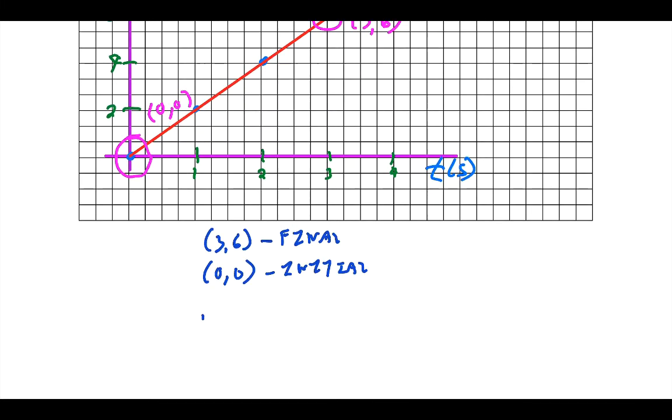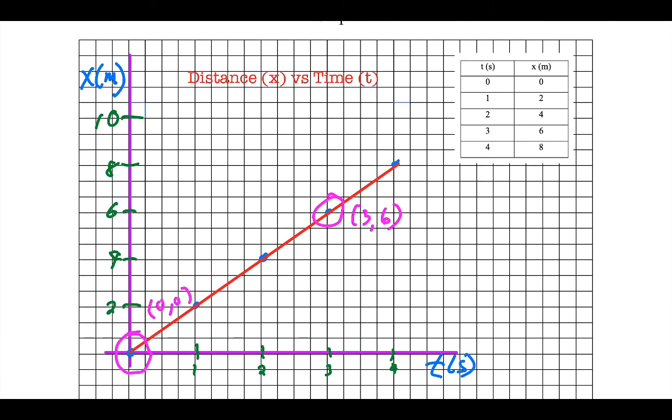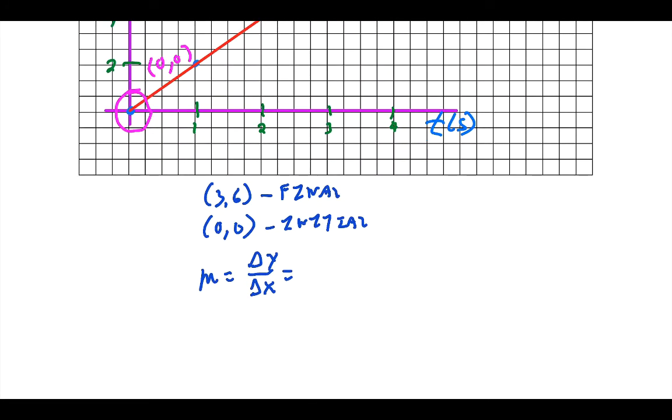If I'm going to take the slope, which is the change in y value over the change in x value, if you really look at what this is, this is the change in distance over the change in time. So really, it would be delta x over delta t in terms of what we're really looking at here. So I want the final minus the initial over final minus initial.